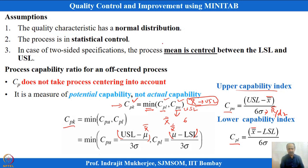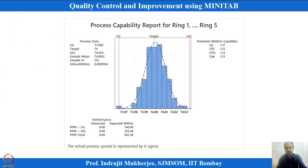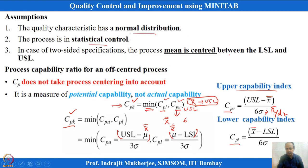The assumptions for CPK are: normal distribution, process under statistical control (no assignable causes), and a stable process. CP measures potential capability assuming perfect centering. If the mean shifts, CPK — the revised formulation — must be used. CPK represents short-term capability and accounts for where the process mean is located relative to the specification limits.